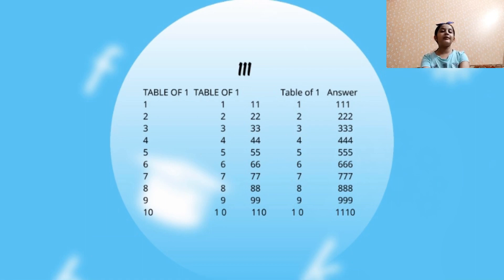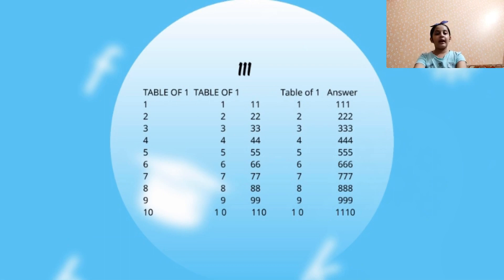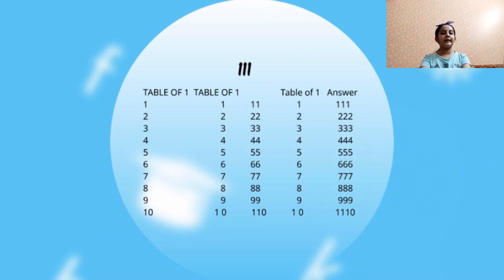Now the fourth step is to write the table of the tens 1 because it is the third digit. So see, I put it in the table of tens 1. Now the fifth and the last step is to simplify this and our answer will come. So let's start. 11 plus 0 is 11 and then this 1. 22 plus 0 is 22 and then this 2. 33 plus 0 is 33 and then this 3. 44 plus 0 is 44 and then this 4. 55 plus 0 is 55 and then this 5. 66 plus 0 is 66 and then this 6. 77 plus 0 is 77 and then this 7. 88 plus 0 is 88 and then this 8. 99 plus 0 is 99 and then this 9. 110 plus 1 is 111 and then this 0. So see, we have made the table of 111.